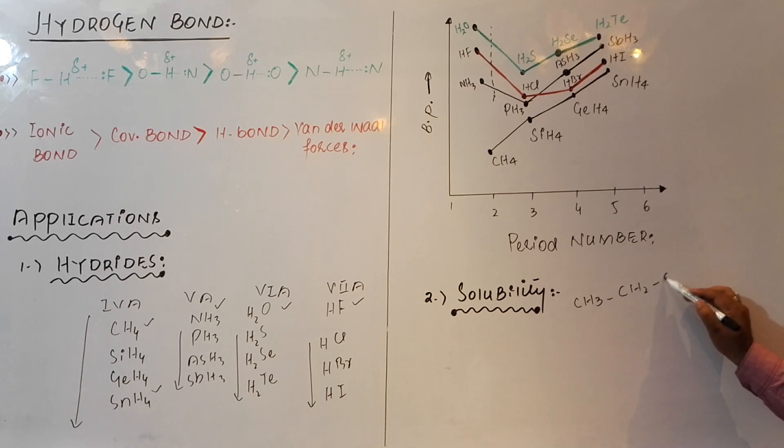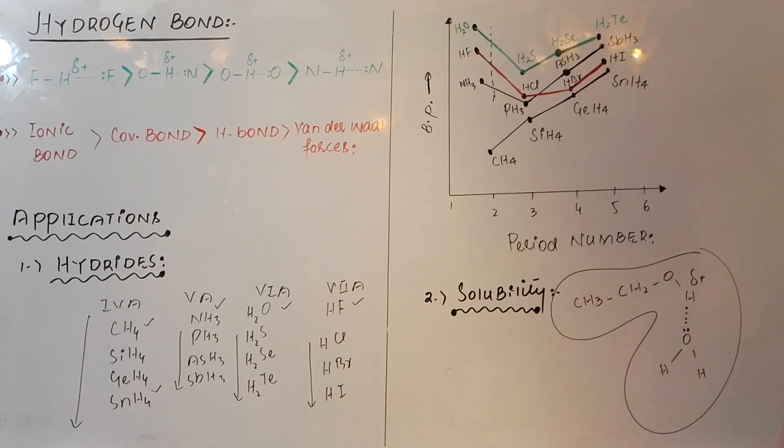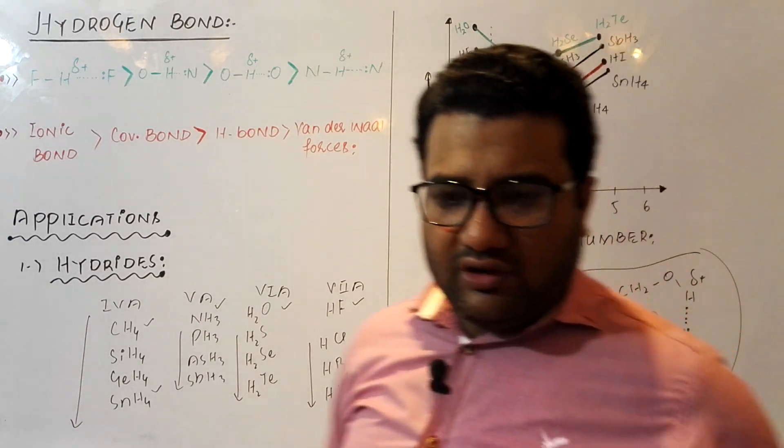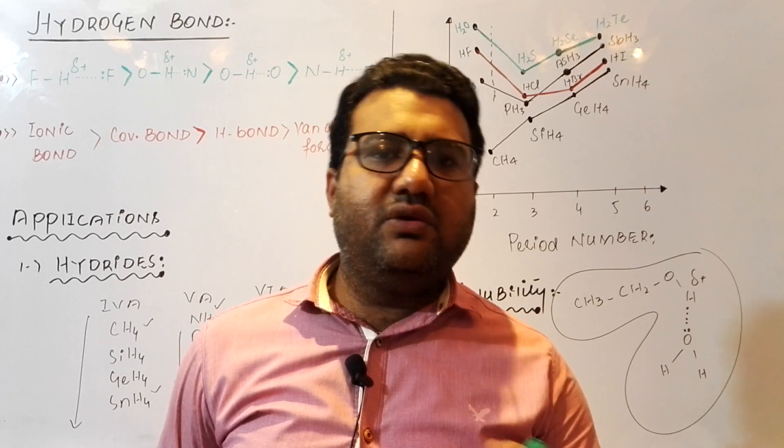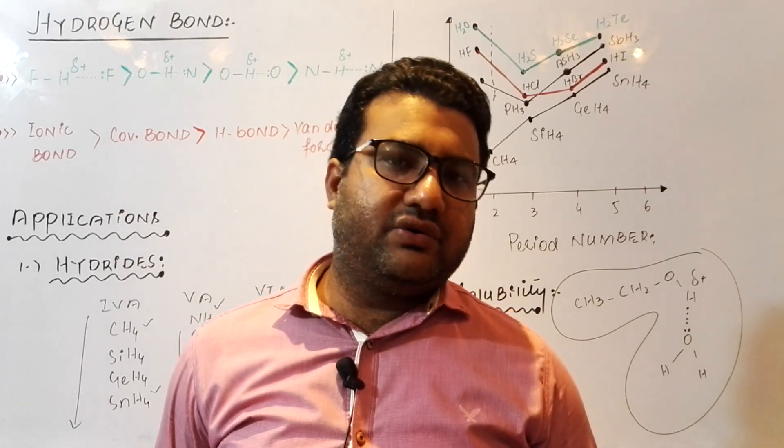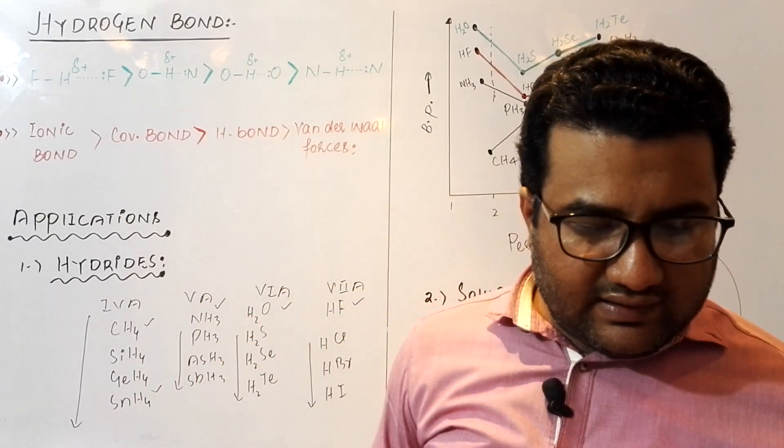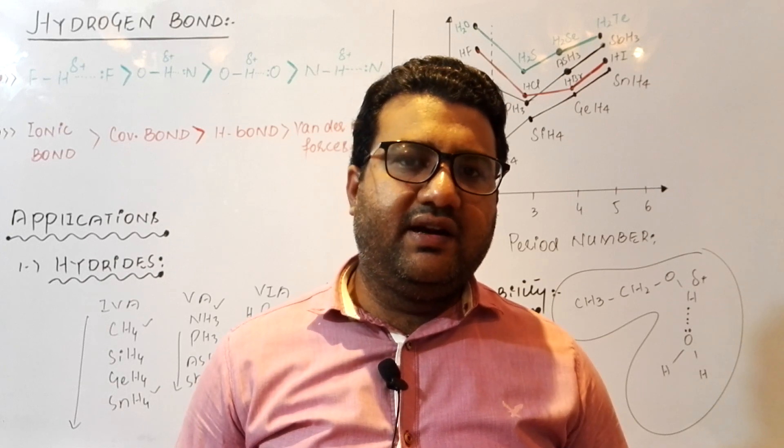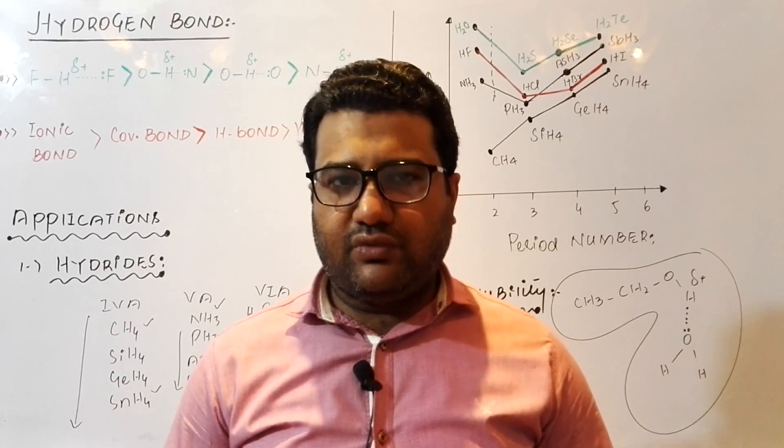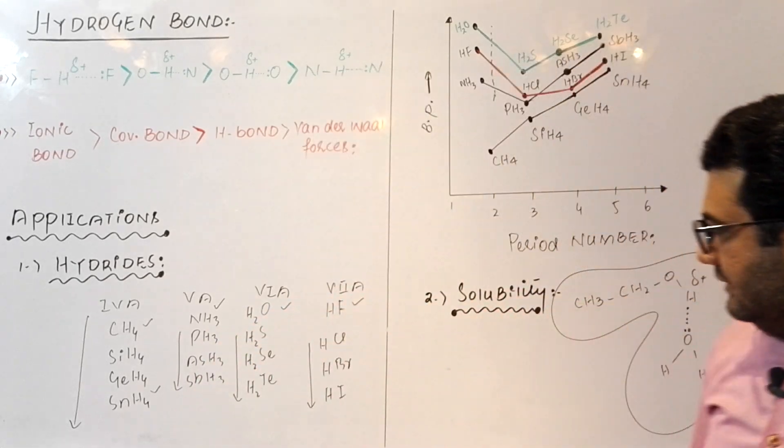Ethanol and water show hydrogen bonding with each other, and that's why ethanol is miscible with water. Also, the lower members of the carboxylic acids, from carbon number 1 to carbon number 4, are also soluble in water due to hydrogen bonding. You can say that if water is a universal solvent, it can dissolve most substances in it. This property is related to hydrogen bonding.